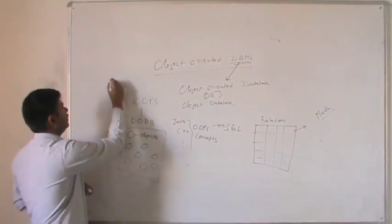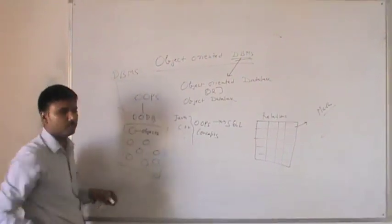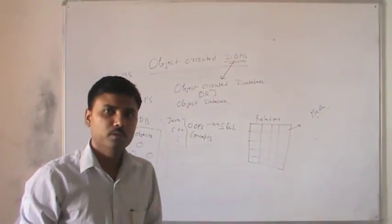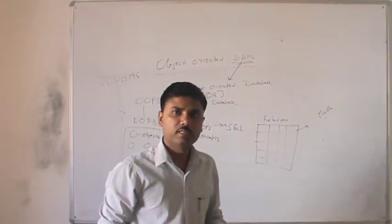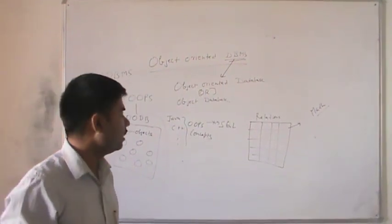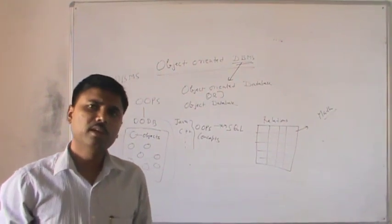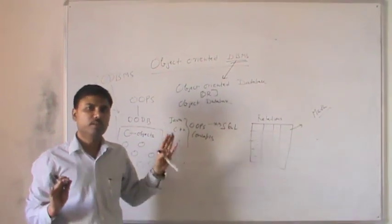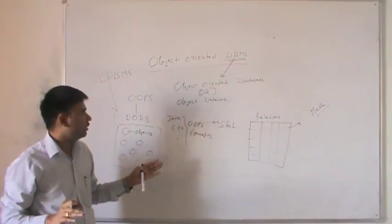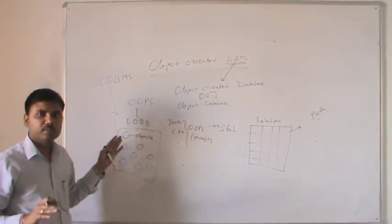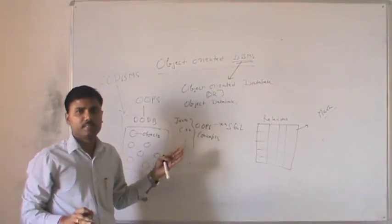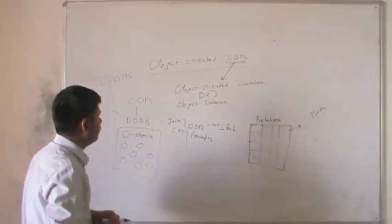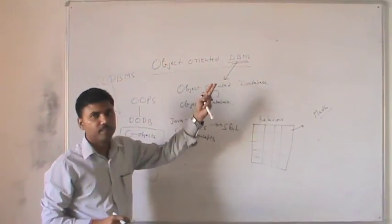They do not worry about the relations, their queries and their structures, how they are working, how data is storing or retrieving, manipulating, and all the aspects given for the relations. They are concerned only about their object-oriented programming concepts. Now they can write their own objects and store them in the corresponding database that is completely supported for object-oriented programming concepts. Both databases are on the same model - that is the object-oriented model. This was all about the object-oriented database management systems.